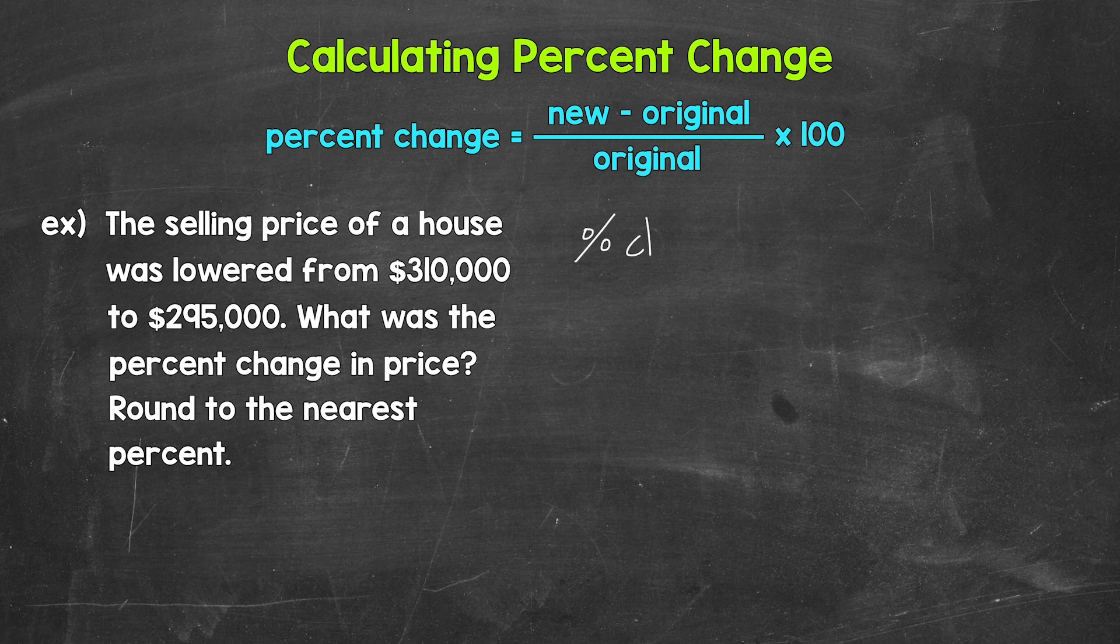We have percent change equals and now we need the new value minus the original value. Well, the new value is $295,000. That's the price of the house now. So $295,000 minus we need the original value now.